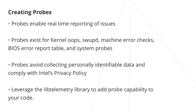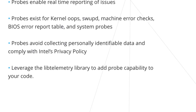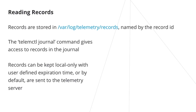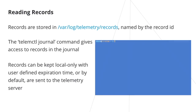You can use the LibTelemetry library to add probe capability to your code with your custom data and payload in the record. When configured to store records locally, the telemetry client writes them to the /var/log/telemetry/records directory, with each record represented by a text file named by the record ID.